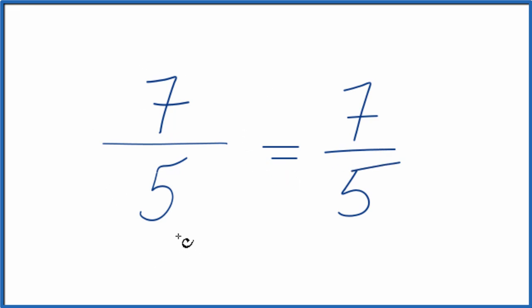And that's what we started with. What that means is that this fraction, 7 fifths, it's already in its lowest terms. It's already been simplified.